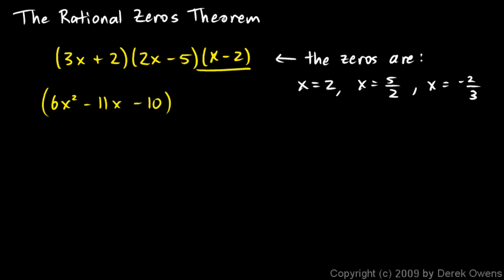And that needs to be multiplied by my x-2 over here. So I'll multiply the x by all three of those terms. So that gives me a 6x³-11x²-10x, and then multiply the -2 by all of those terms. That gives me a -12x²+22x+20.